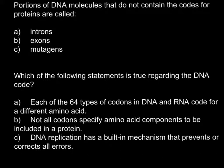Portions of DNA molecules that do not contain the codes for proteins are called... and here are the three choices. I want to cross out answer C, because mutagens has nothing to do with this question. Mutagens are usually chemical substances that mutate the code of the DNA, and this could also be different types of radiation.